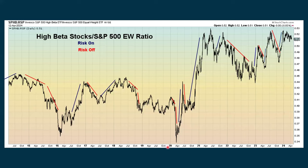This first chart measures high beta stocks — stocks that tend to outperform the market. Unfortunately, they not only outperform to the upside, they outperform to the downside too. When we see this really going up, the high beta stocks are outperforming and we call that risk on. When it's going down, folks are getting out of high beta stocks and into more conservative stocks that may still be going down but probably going down less — that's risk off. Since the beginning of 2024 we've been chopping around in a range, so I haven't been showing this chart.